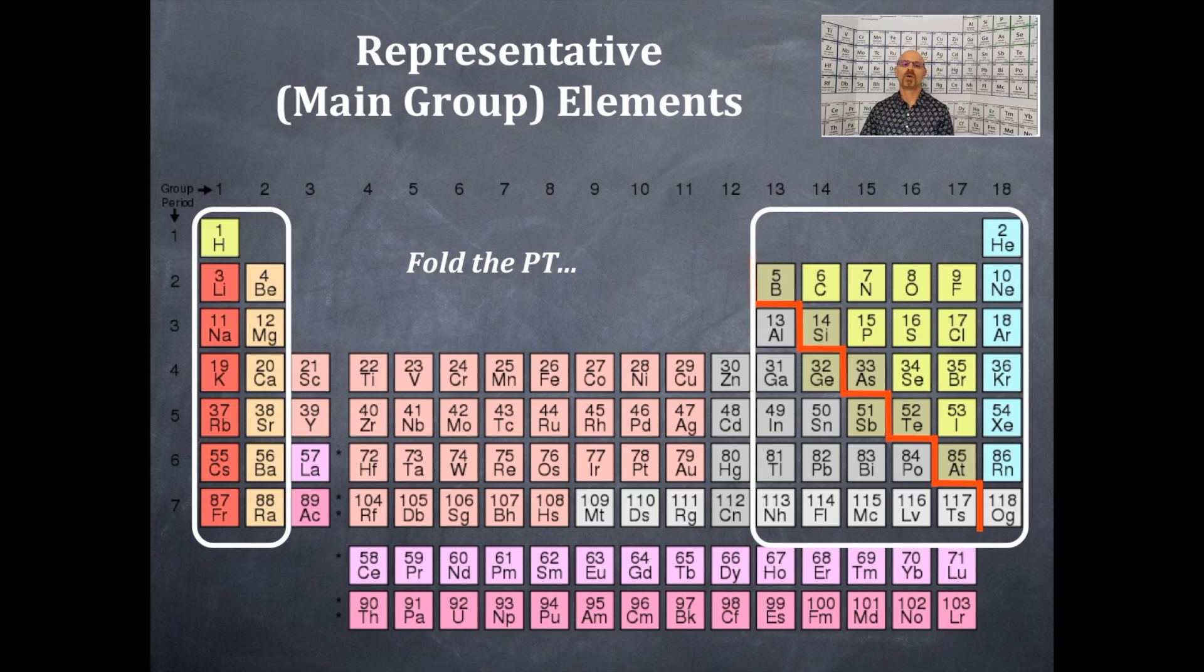Why are they the main group or representative elements? They are the main group elements because I have solids, liquids, gases, metals, non-metals, and metalloids. I have all the basic types of chemistry within this main group of elements.